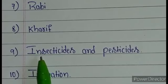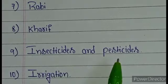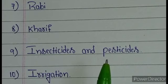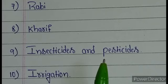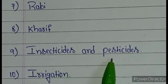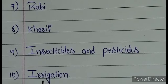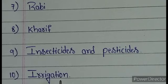The next keyword is insecticides and pesticides. These are substances used for killing insects and other pests that destroy crops. And the last keyword is irrigation. Irrigation means the supply of a sufficient amount of water to plants in the agricultural field regularly is called irrigation.